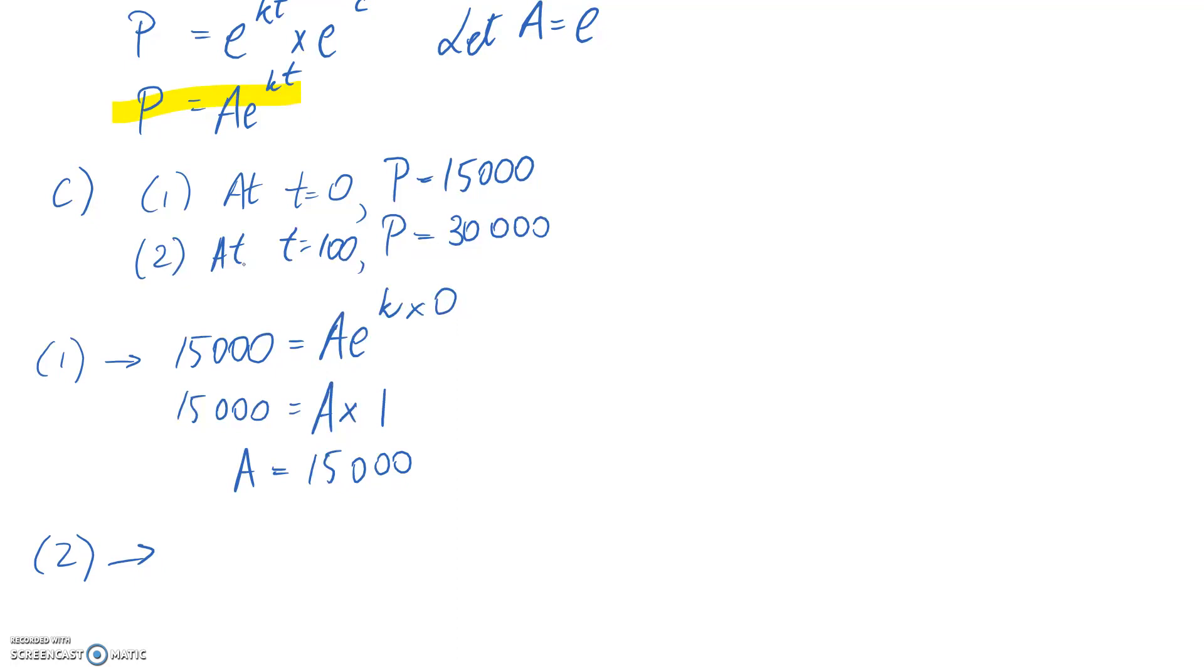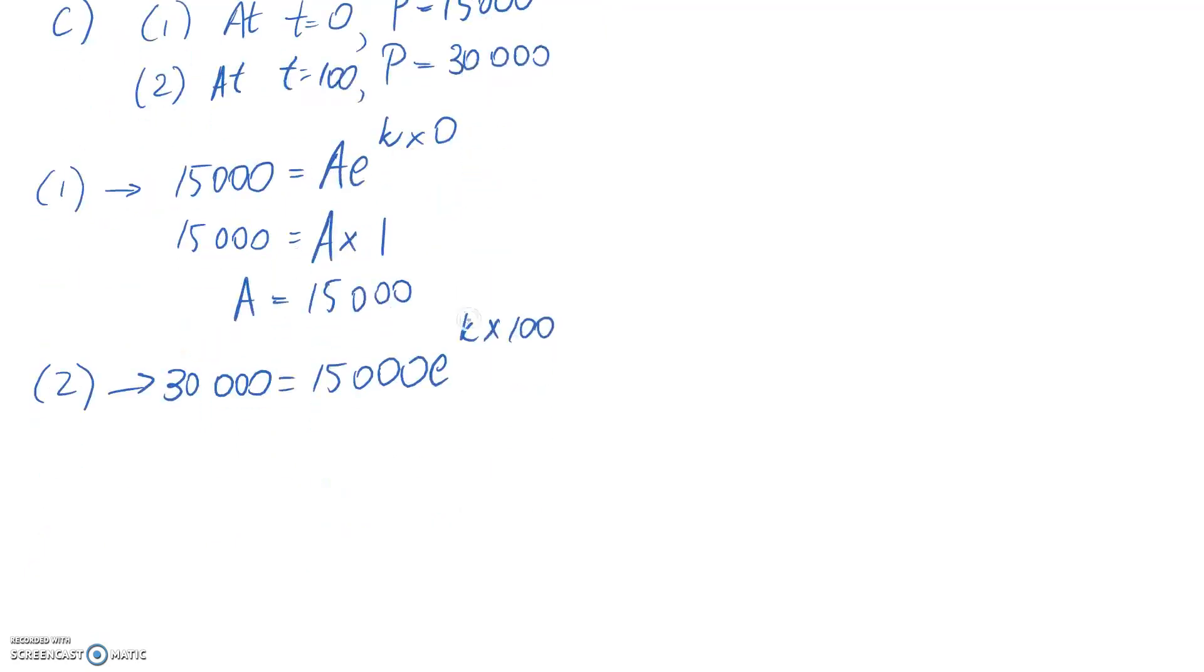Now we use the second condition to find k. Substituting: P = 30,000, a = 15,000, t = 100. This gives 30,000 = 15,000·e^(100k). Dividing both sides by 15,000 gives 2 = e^(100k).